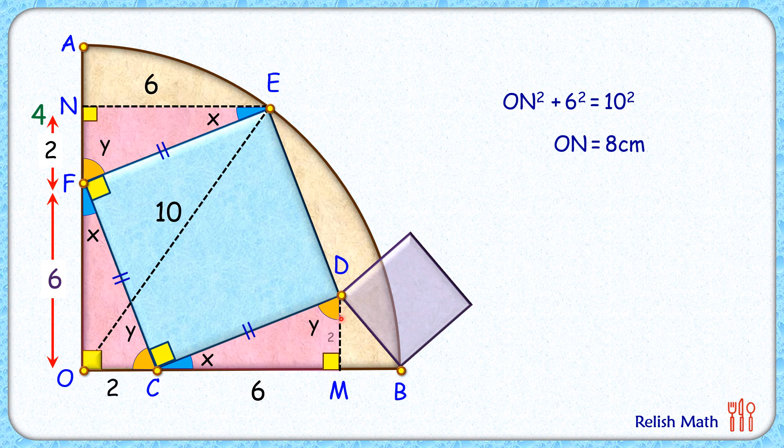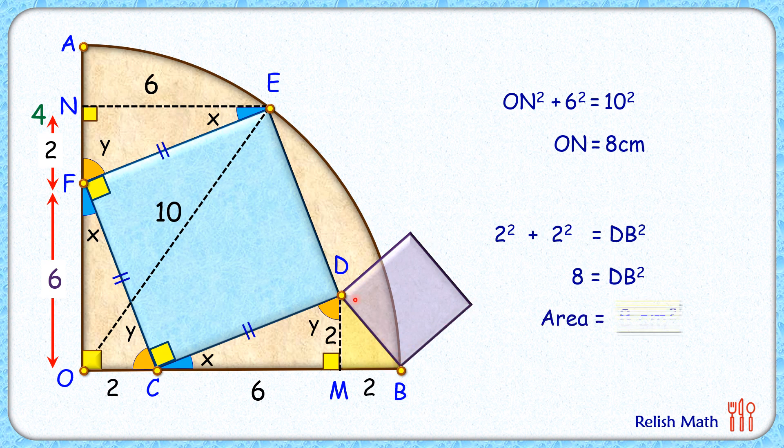We know that the radius of this quadrant is 10 centimeters, out of which OC and CM is 2 and 6 centimeters. Thus this remaining length MB will be 2 centimeters. Now in this triangle DMB, applying Pythagorean theorem, we'll get DB² as 8 centimeter square. But DB² is nothing but area of this purple square, and thus area of the purple square is 8 centimeter square. And that's our answer.